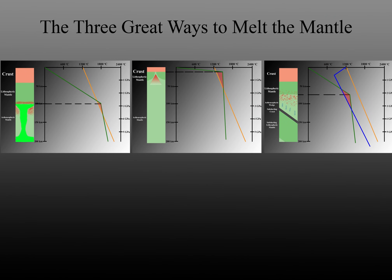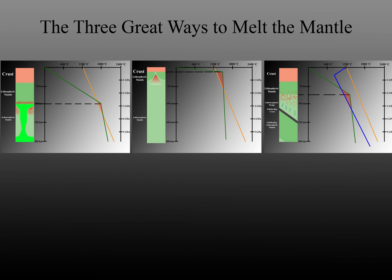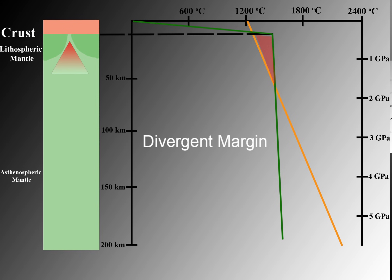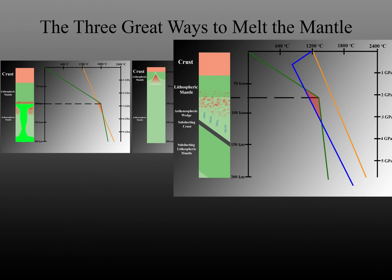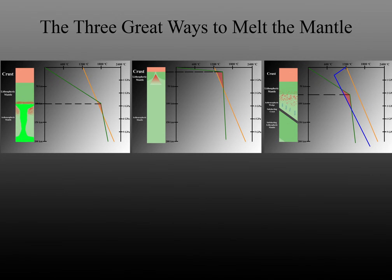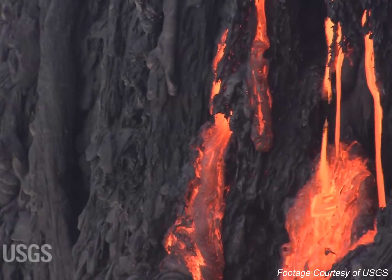Let's recap. Under normal conditions, the mantle is solid and will never melt. However, there are three great tectonic settings where conditions are right for the mantle to melt. Intraplate mantle plumes make the mantle hotter, causing the geotherm to cross the solidus. Divergent margins allow the asthenospheric mantle to rise to unusually shallow depths, decreasing pressure and causing the adiabatic geotherm to cross the solidus. Convergent margins introduce water, replacing the regular solidus with a wet solidus that naturally crosses the geotherm. We hope you enjoyed this simple explanation of the three great ways that Earth's solid mantle is able to melt.